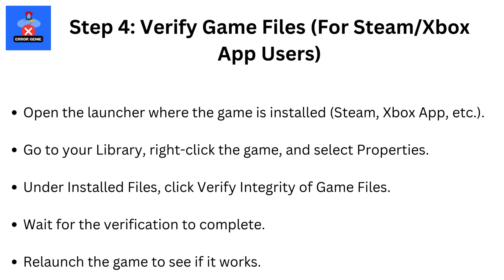Step 4: Verify Game Files for Steam, EA, and Xbox app users. Open the launcher where the game is installed — Steam, Xbox app, etc. Go to your library, right-click the game, and select Properties.